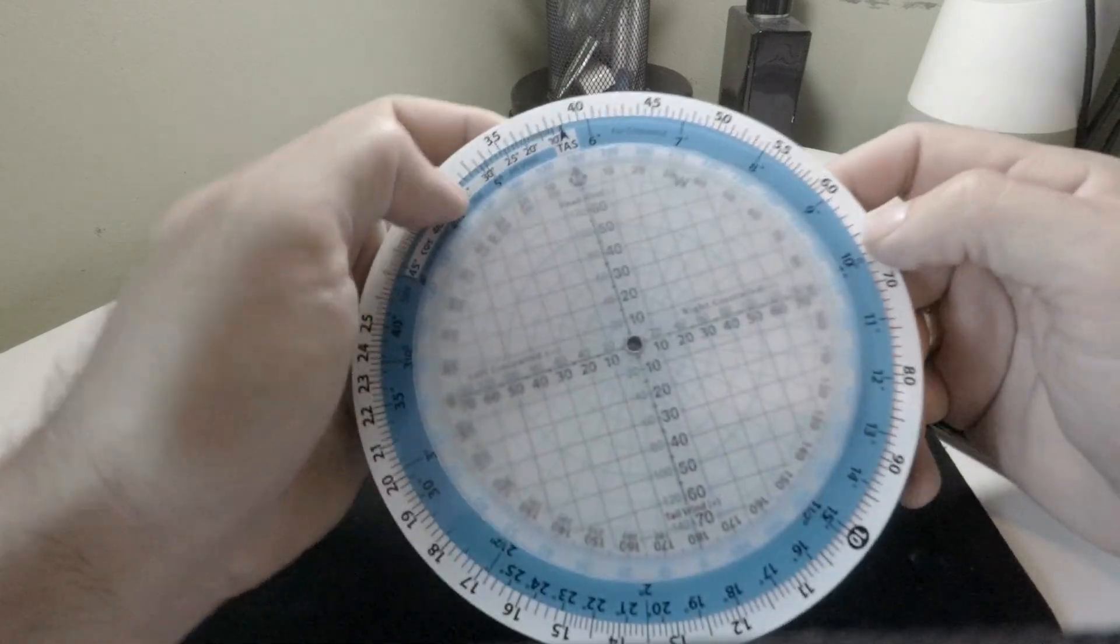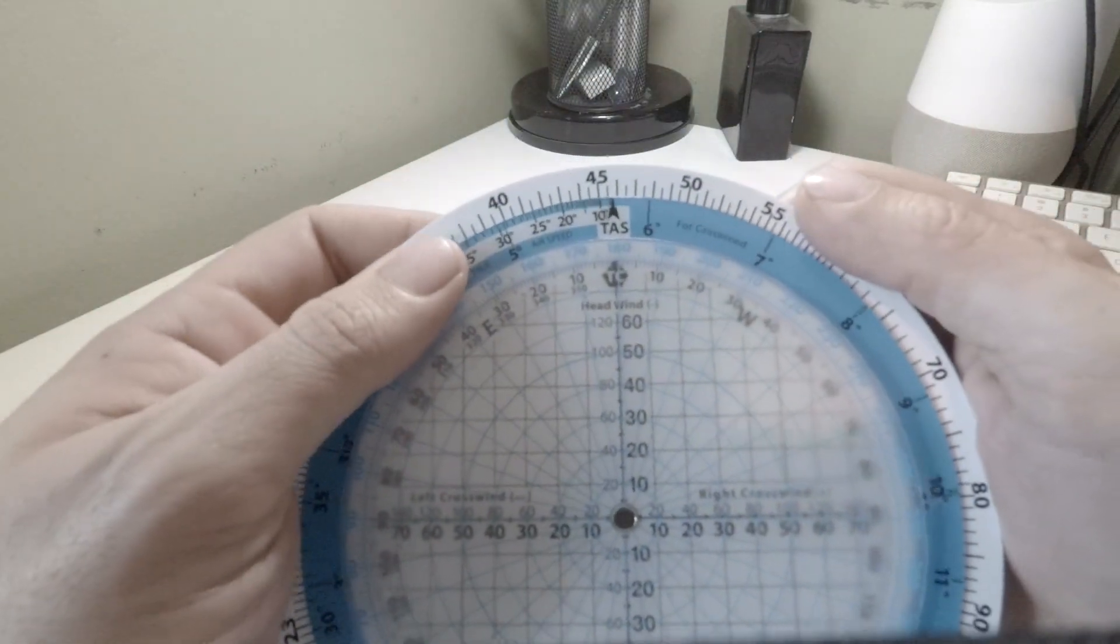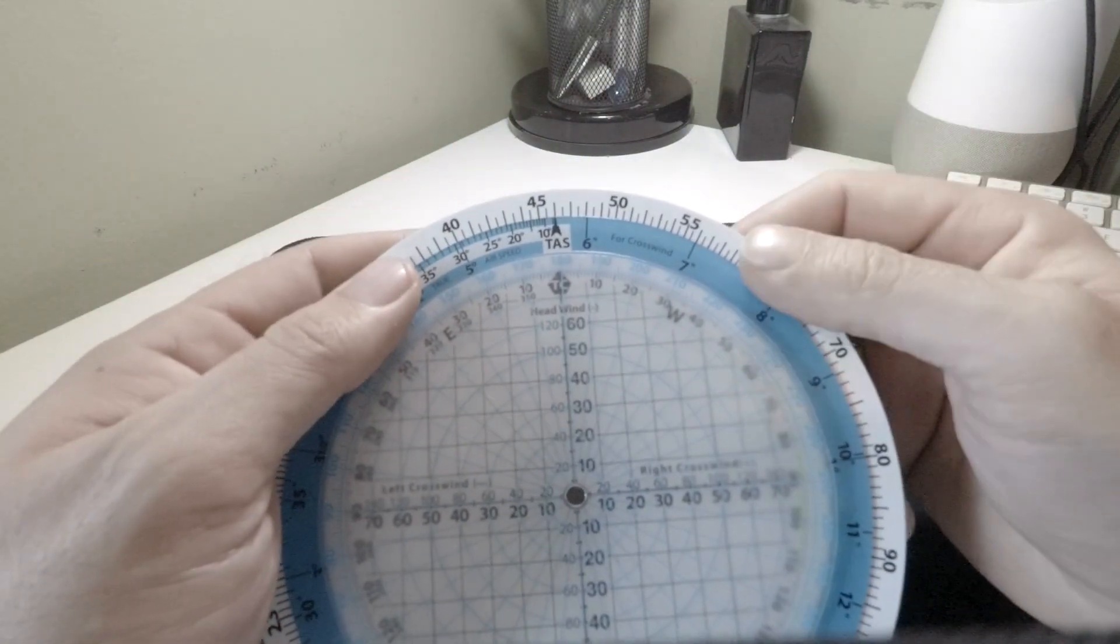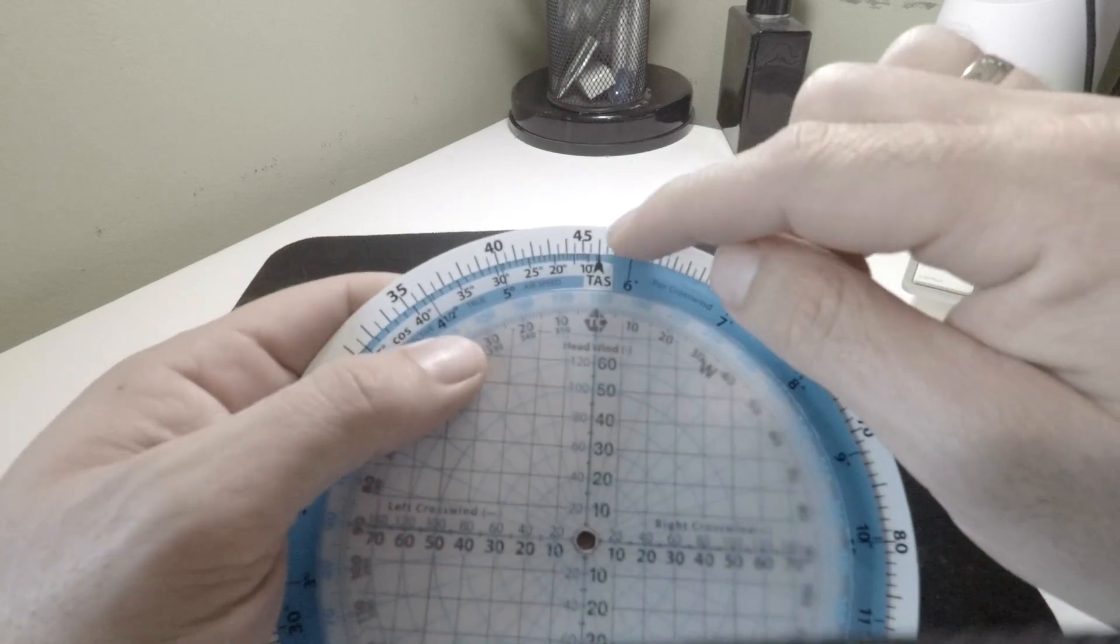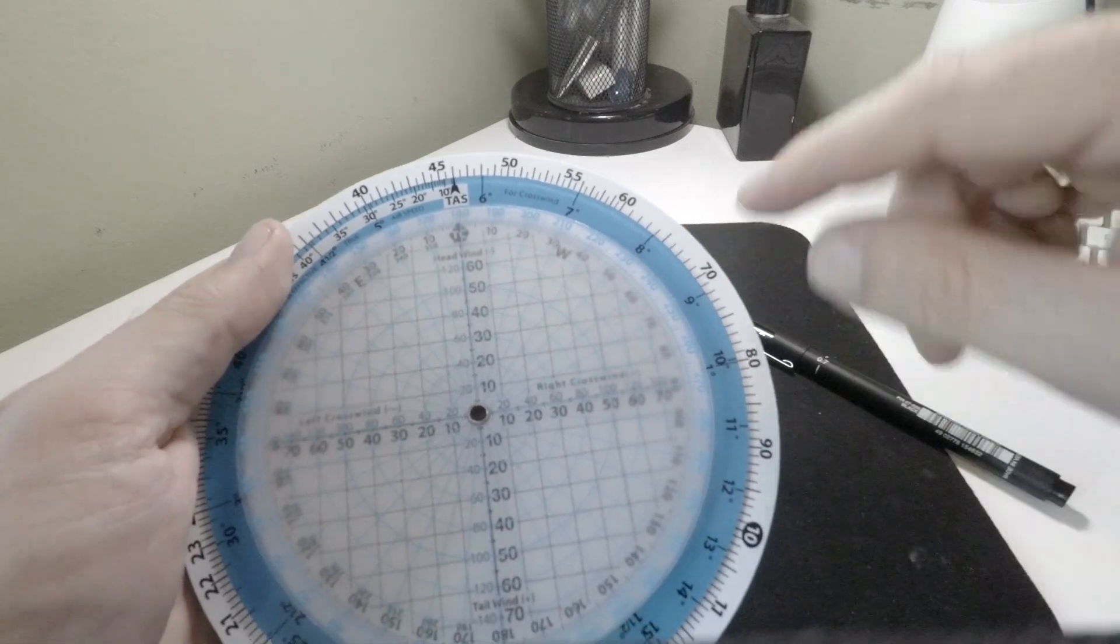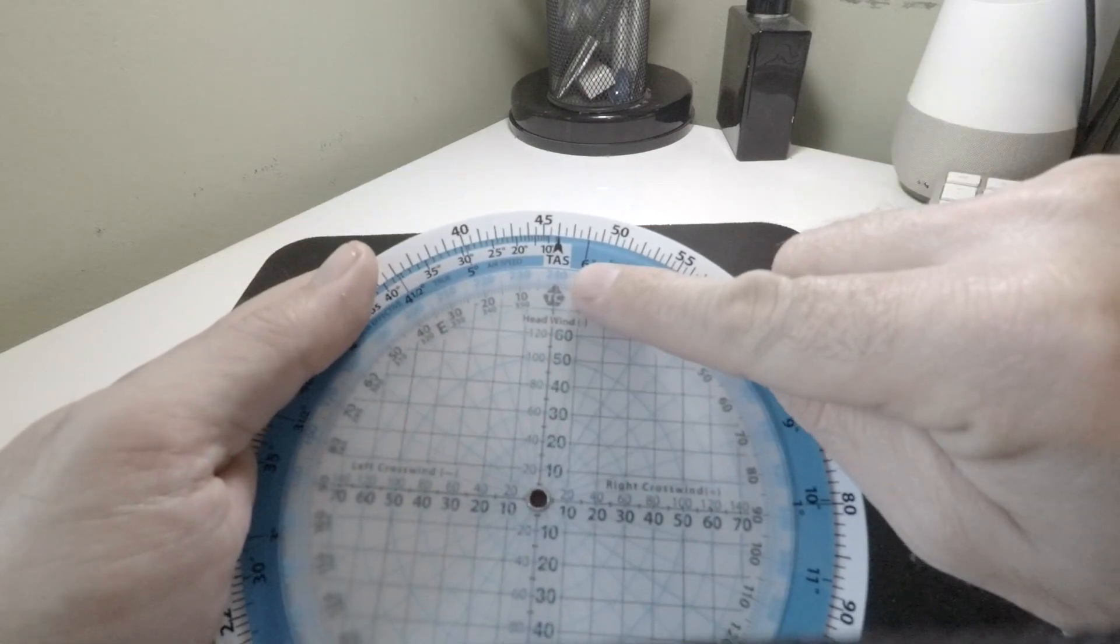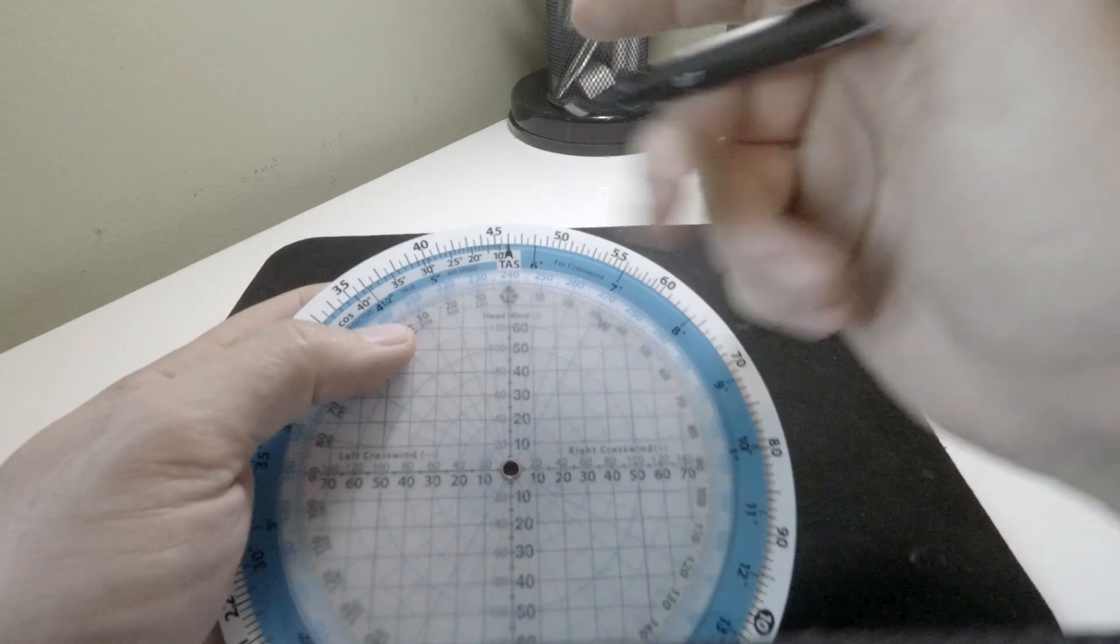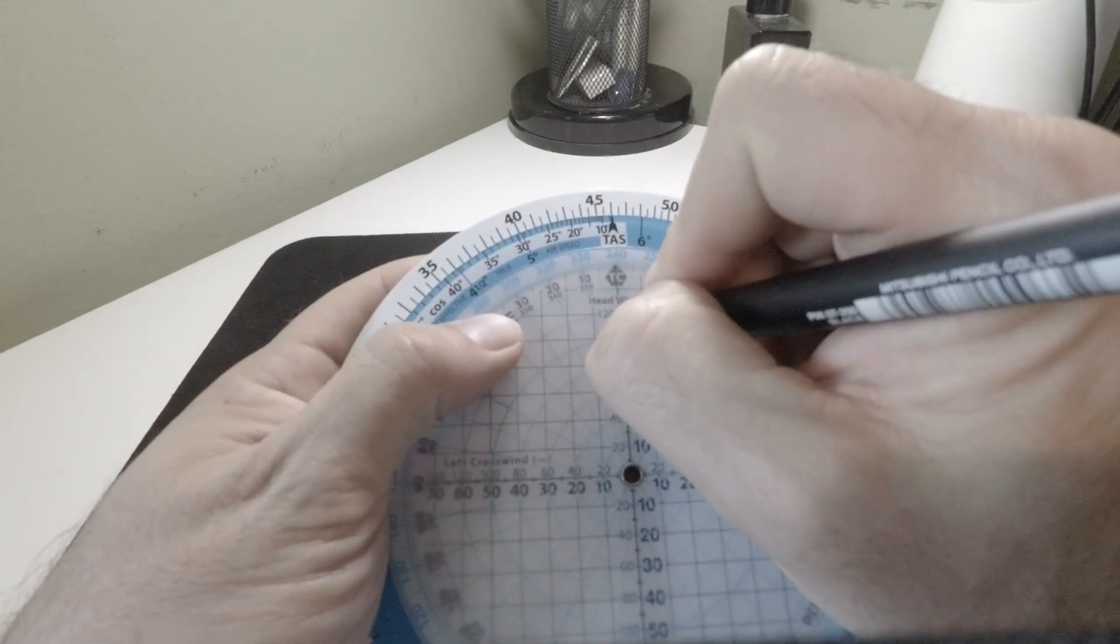In this case, we line up TAS at 460 knots, so four-six on the outside. Now our winds are going to be 240 degrees at 100 knots, so it's quite gusty, quite breezy. We'll put our dot there.